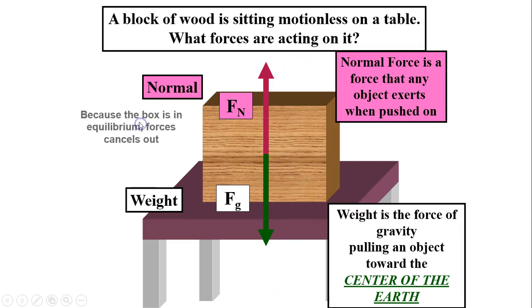Because the box is at rest, that means it's in equilibrium. Forces have to cancel out. F_N and F_g have to be the same, so they must have the same size. F_N equals F_g. Now let's just practice how to draw free body diagrams.